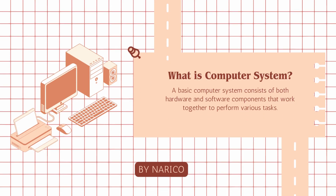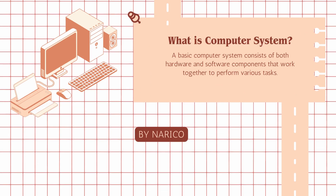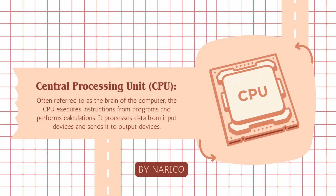A basic computer system consists of both hardware and software components that work together to perform various tasks. Central processing unit, CPU, often referred to as the brain of the computer, the CPU executes instructions from programs and performs calculations. It processes data from input devices and sends it to output devices.